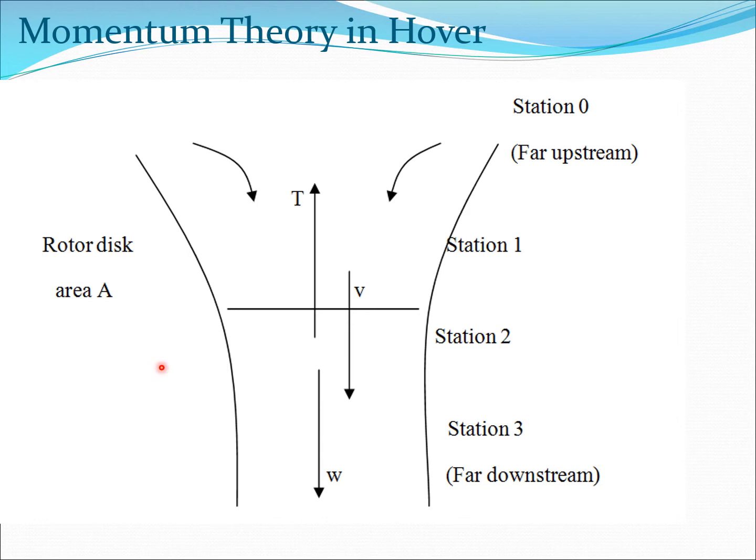So let's return to our flow field diagram. As usual, we have the rotor disk, we have the induced velocity through the rotor disk equal to v, far downstream w, the rotor generates a thrust.